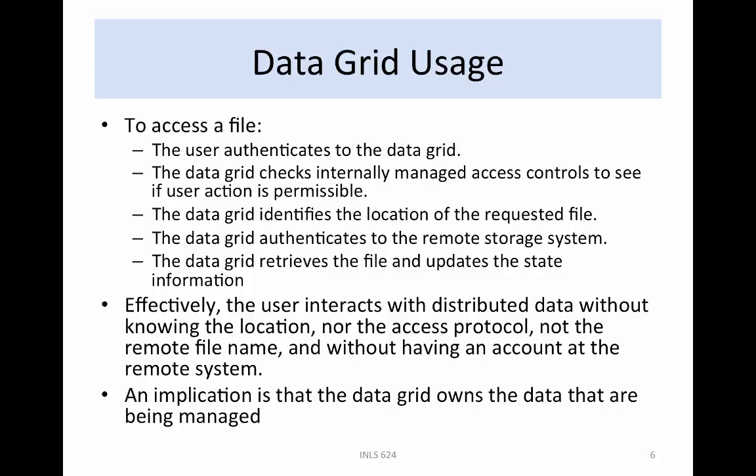The steps performed when a user accesses the DataGrid rely upon the virtualization mechanisms for each operation. The user connects to any of the DataGrid servers. The server interacts with the metadata catalog server to authenticate the identity of the user. The action requested by the user is authorized. The location of the requested file is found from the metadata catalog. The DataGrid authenticates itself to the remote storage location, retrieves the file, and updates the state information.